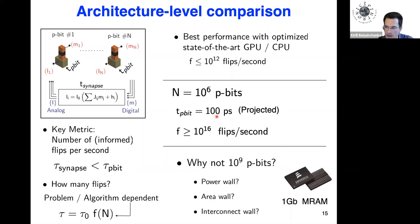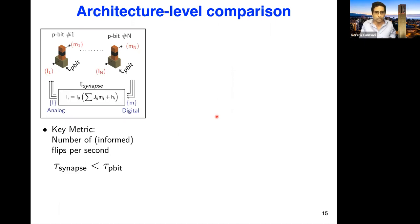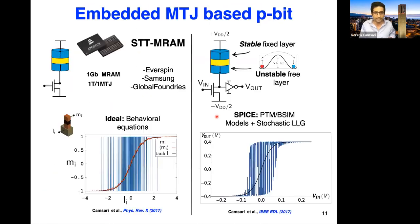A question from the audience: how does the performance of the MTJ-based device depend on the TMR ratio? One might suppose an unstable free layer gives poor TMR. One pleasant surprise is that you don't need a heroic TMR ratio here.